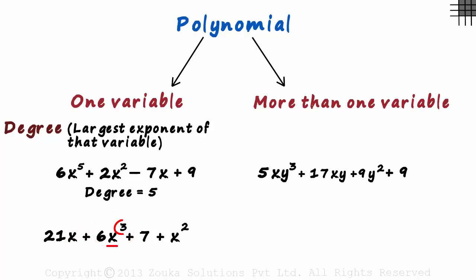And in the last term, it's 2. 3 becomes the largest exponent of the variable. And that's why the degree of this polynomial is 3.